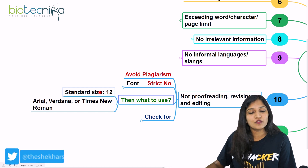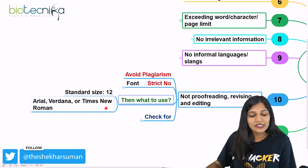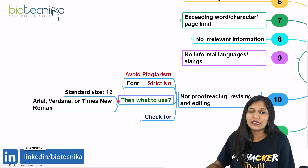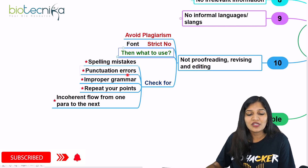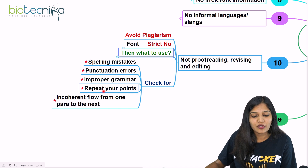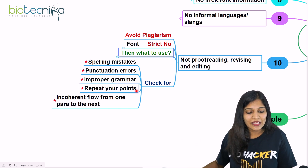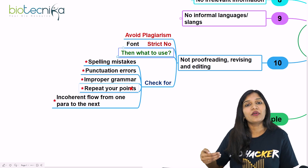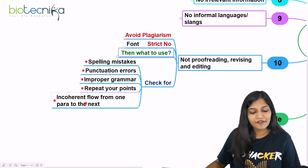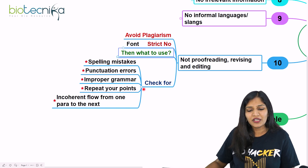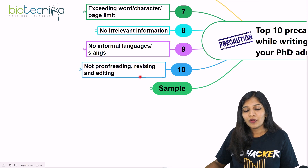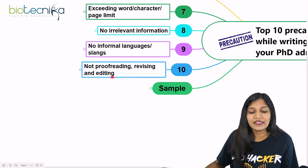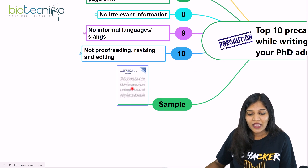Use a font size of 12, with Arial, Verdana, or Times New Roman — these are standard formats. Check for spelling mistakes using Grammarly, punctuation errors, improper grammar, and repeated points. Ensure the first paragraph is coherent and flows naturally into the second. If there is no flow, rearrange it. Always go for proofreading, revising, and editing before submitting your SOP.